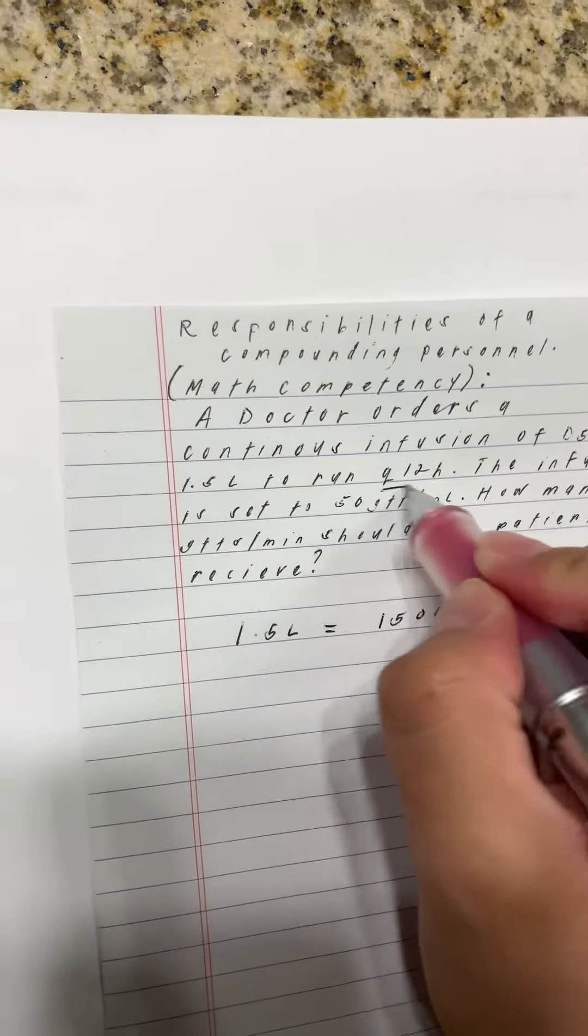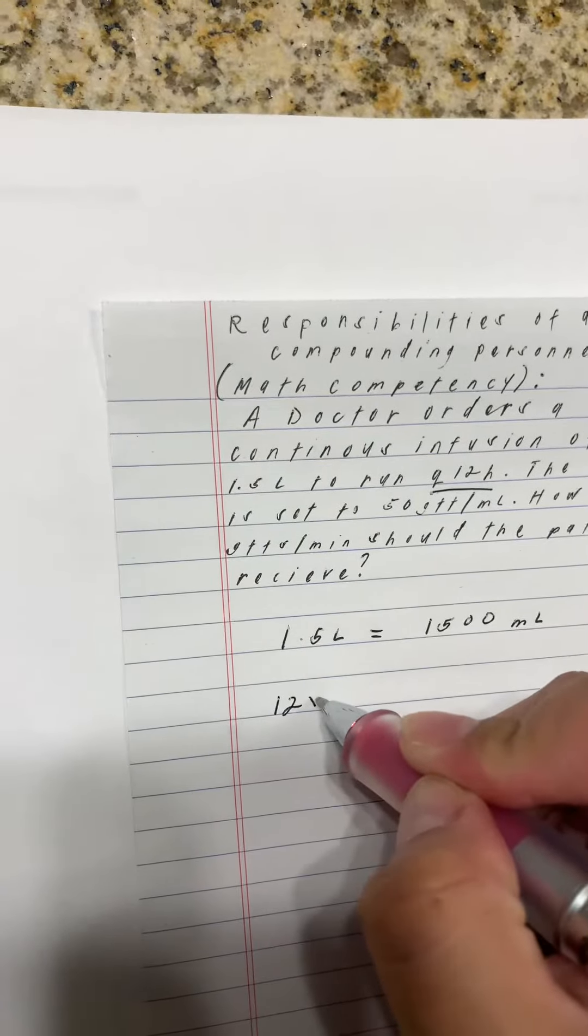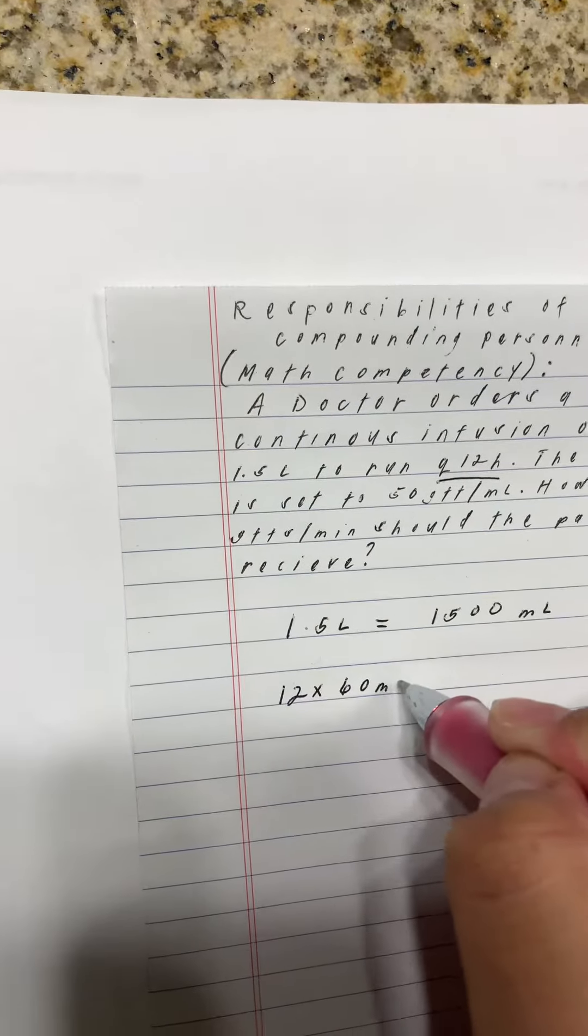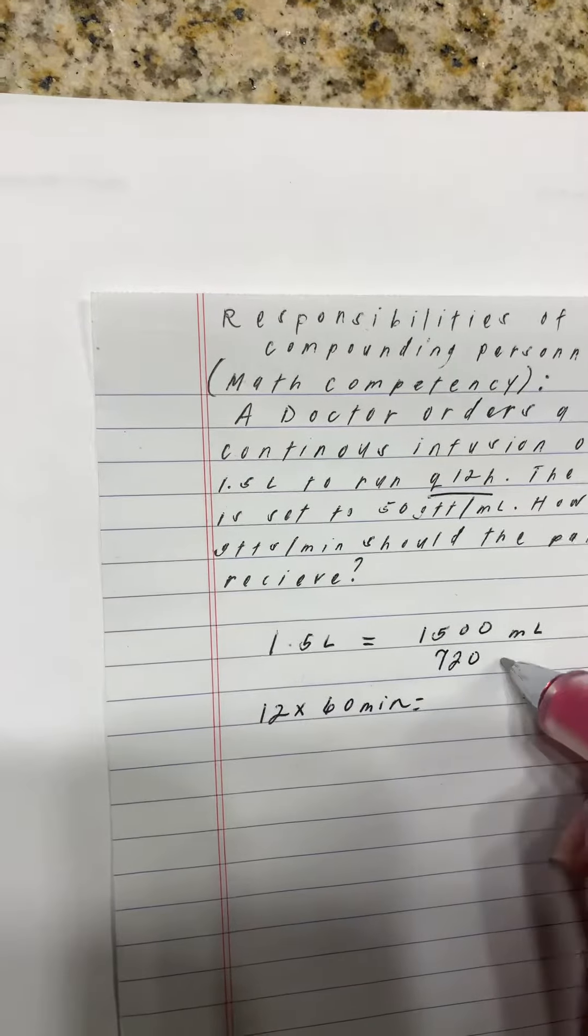And then you take the hours and multiply 12 hours times 60 minutes, and you get 720 minutes.